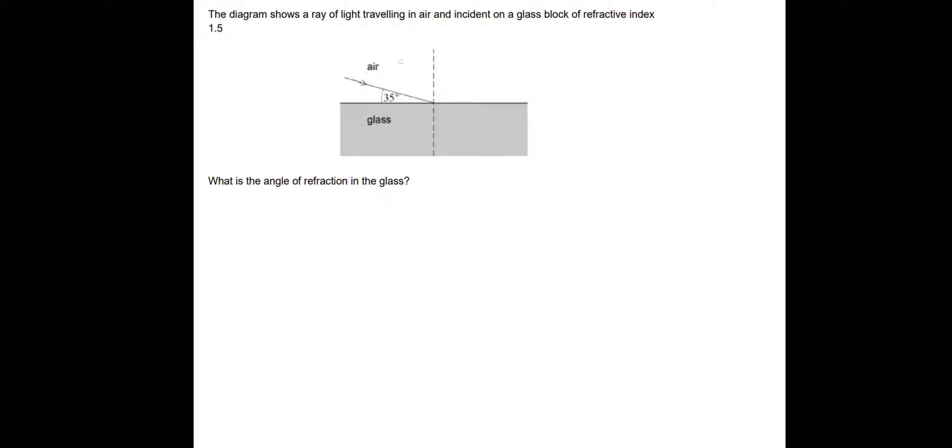First of all we need the angle measured from the normal, so we need to do 90 minus 35 to give us that angle. So that's 55 degrees. And then we just need to apply Snell's law. So N1 sine theta 1 is equal to N2 sine theta 2.